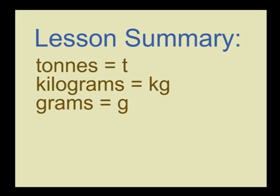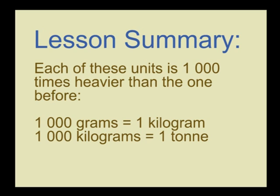We have seen that there are three main units of mass: namely tons, the biggest, which is abbreviated as t; kilograms, most often used in daily life and written shortly as kg; and grams, the smallest, written as g. Each of these units is a thousand times heavier than the other before. There are one thousand grams in a kilogram and one thousand kilograms in one ton.